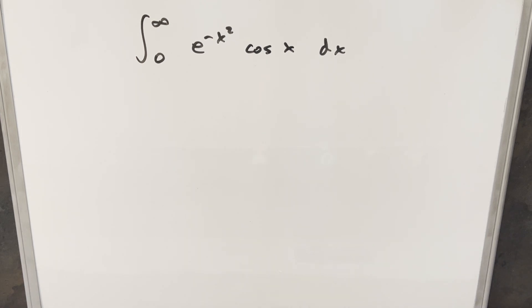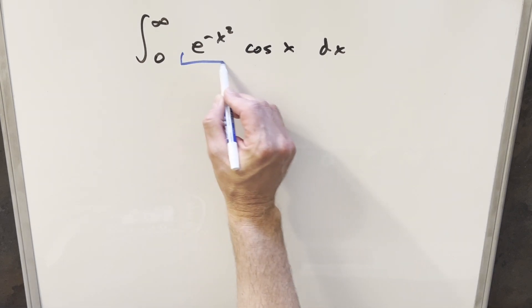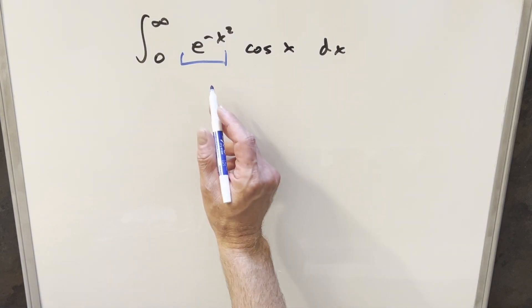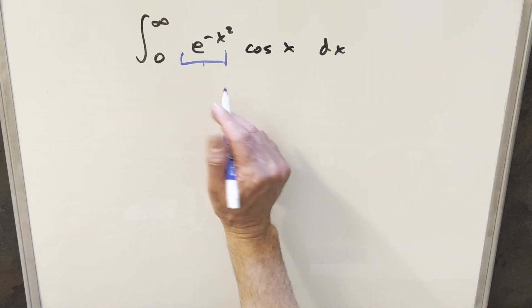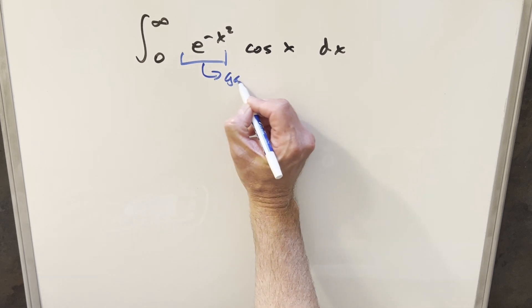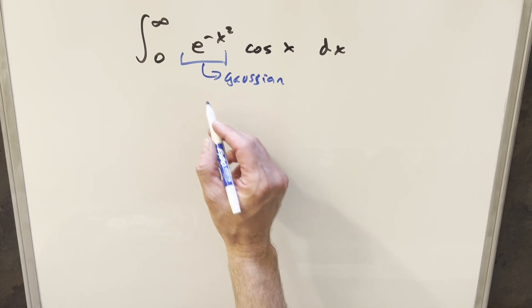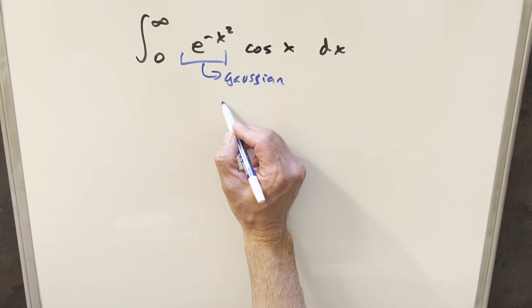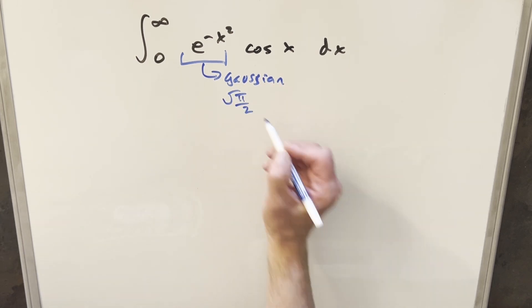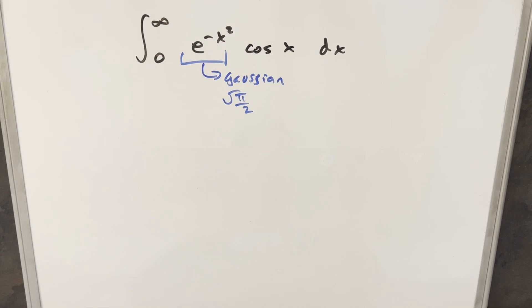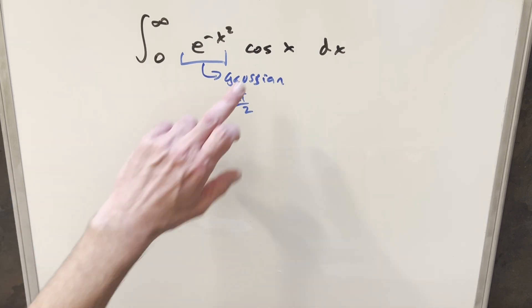We have something interesting today: the integral from 0 to infinity of e to the minus x squared times cosine x dx. To get started, notice this first piece, e to the minus x squared. If this were all we had, this is actually the Gaussian integral. With those bounds and without the cosine, we know the value is square root of pi over 2. But the trouble is how we handle this integral with cosine x.